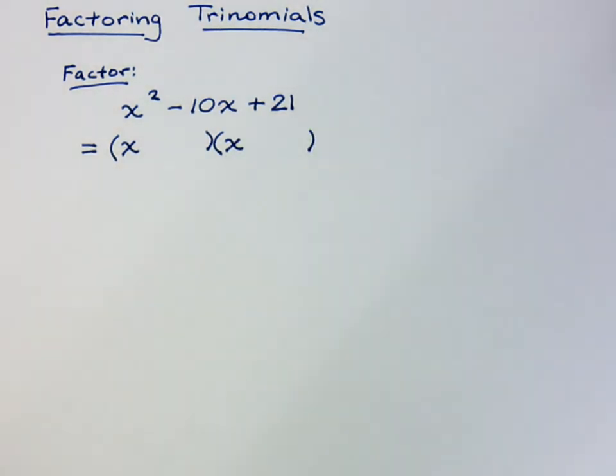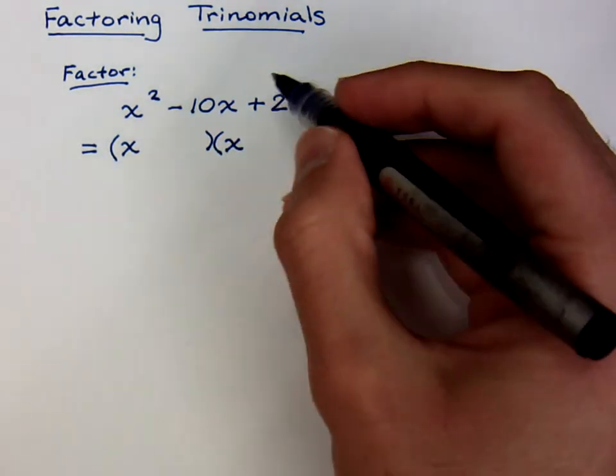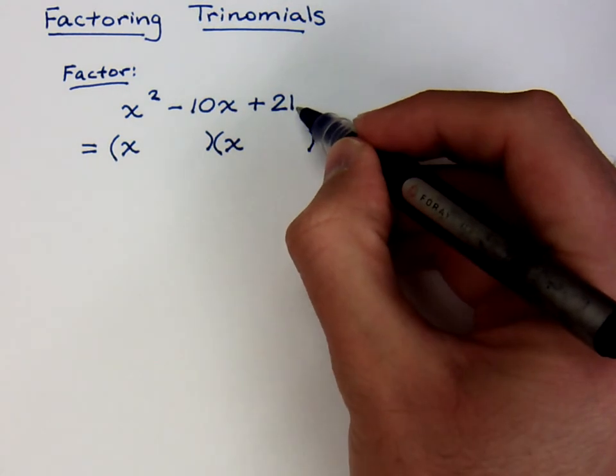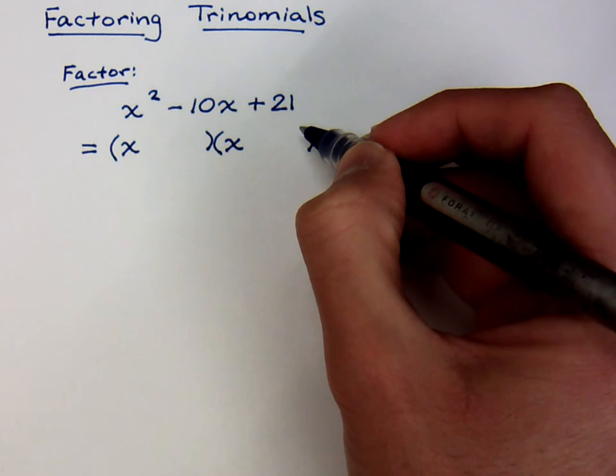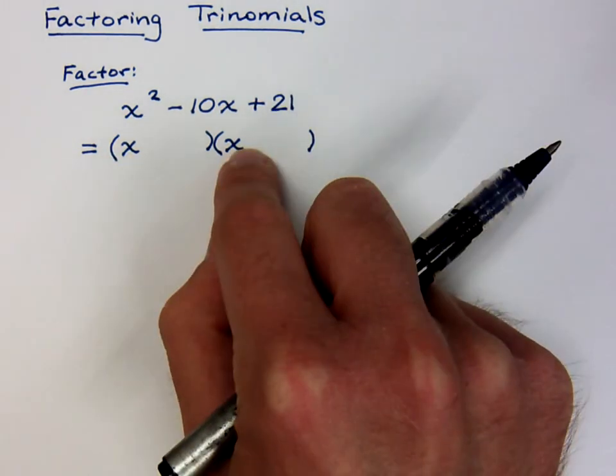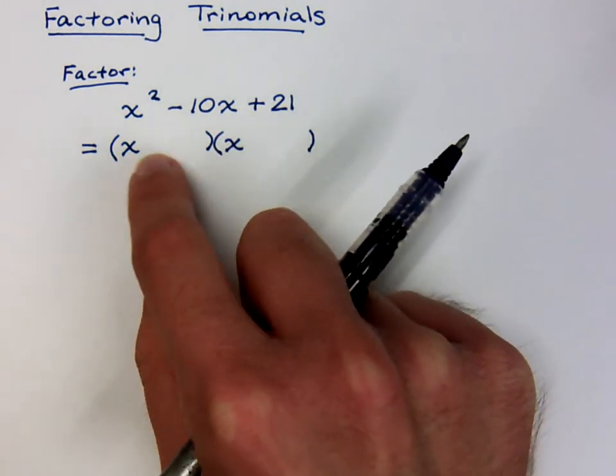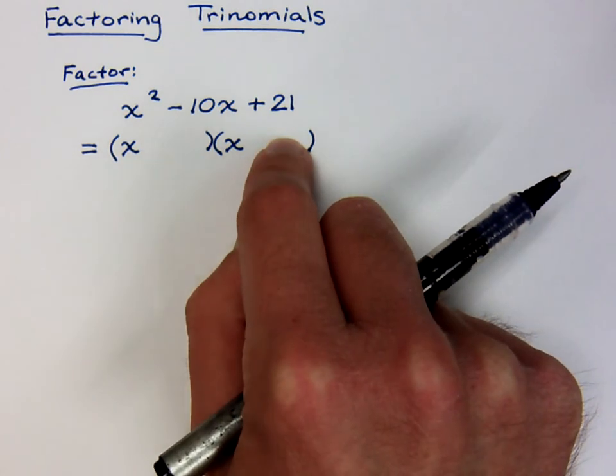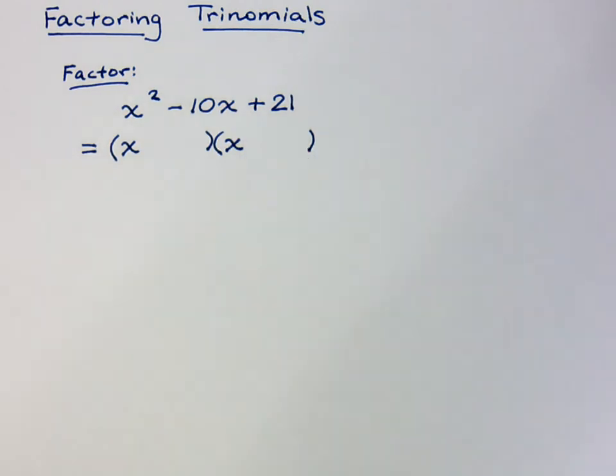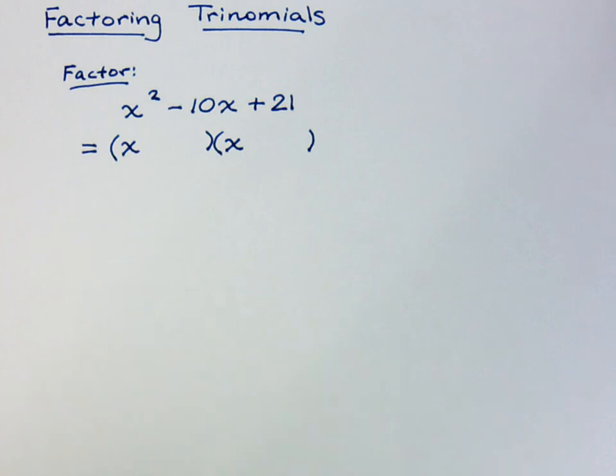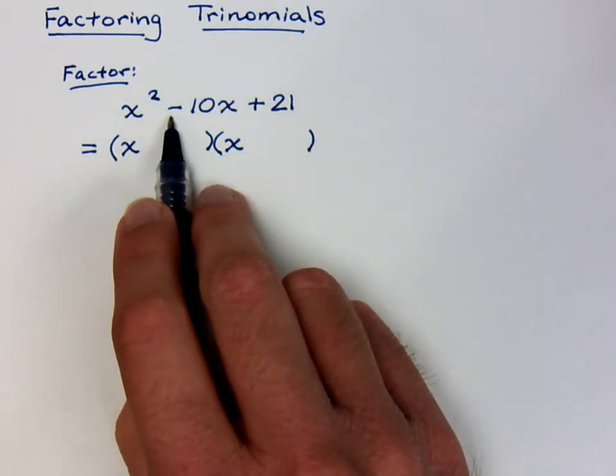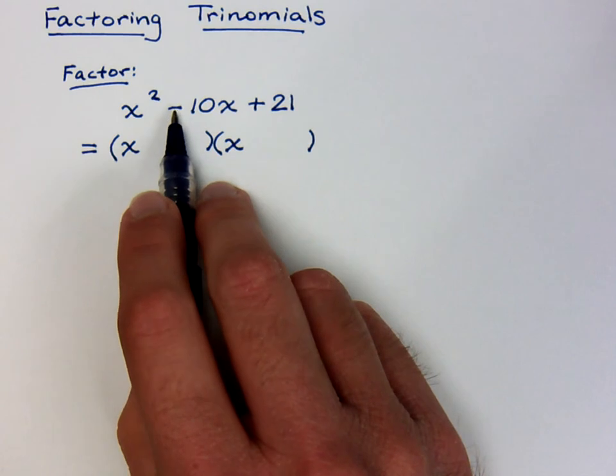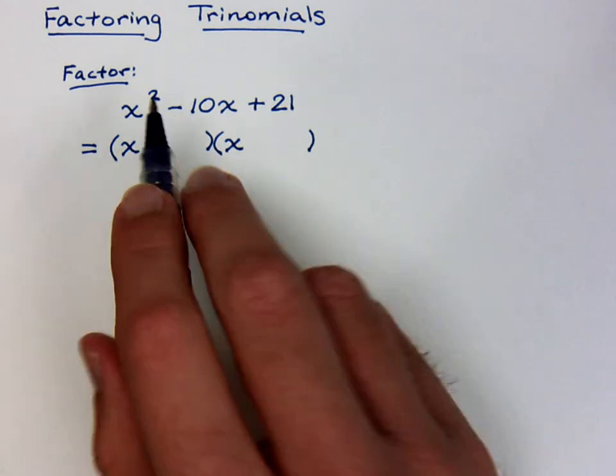Now, we need to pause and think about what the signs are going to be. We know that we have to break down this positive 21, and in order to break down a positive number, your signs have to be the same. If you do positive times positive, that gives you a positive, or a negative times a negative will also give you a positive. So you have to think, well, which one do I use? Should they both be positive or both be negative? This guy right here is going to be the clue. This tells you that you have to have negatives.